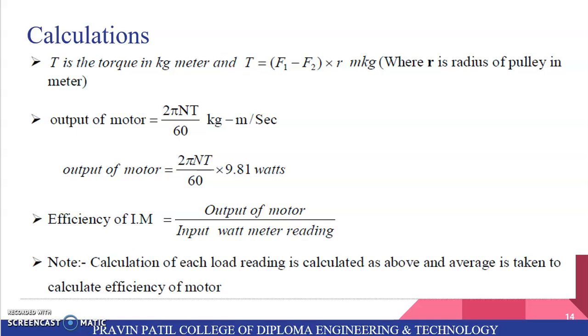Next is the calculations. So T is the torque in kg meter and T is equal to F1 minus F2 into R m kg, where R is radius of pulley in meter. Output of motor is equal to 2 pi NT upon 60 kg meter per second. Output of motor is equal to 2 pi NT upon 60 into 9.81 watts. Efficiency of induction motor is equal to output of motor upon input wattmeter reading. Note: calculation of each load reading is calculated as above and average is taken to calculate efficiency of motor.